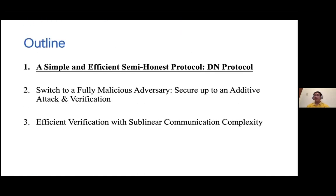Now we are ready to see how communication-efficient protocols are constructed. Here is an outline of this talk. We will first introduce the DN protocol, the best known communication-efficient protocol with semi-honest security. Then we will discuss the security of the DN protocol against a fully malicious adversary, and show how previous works achieved malicious security by using a verification protocol. Finally, we will introduce our efficient verification protocol with sublinear communication complexity. Using such a verification protocol, we can achieve malicious security with the same communication efficiency as the DN protocol.